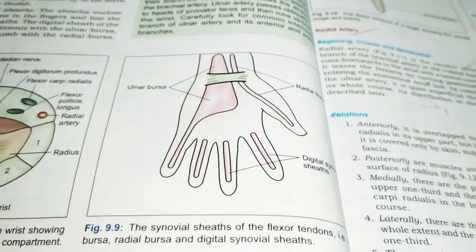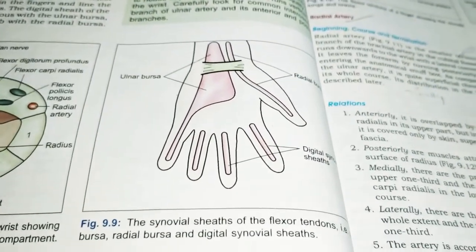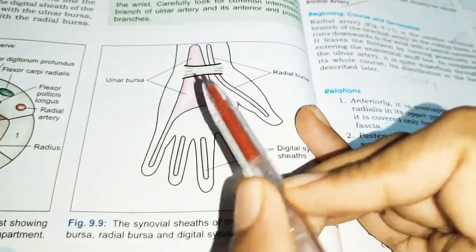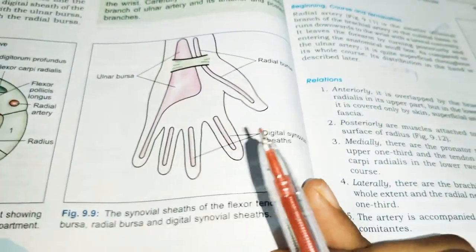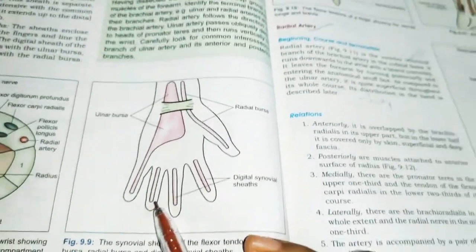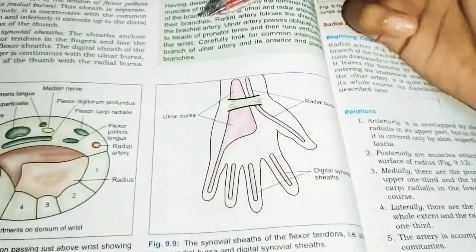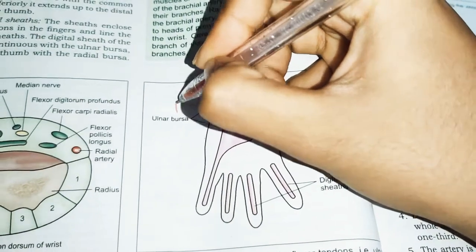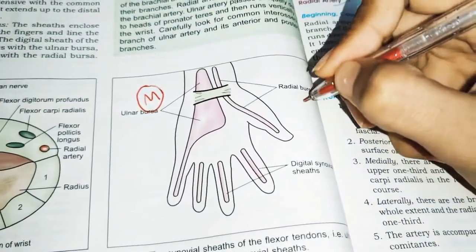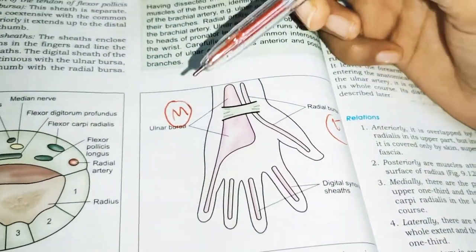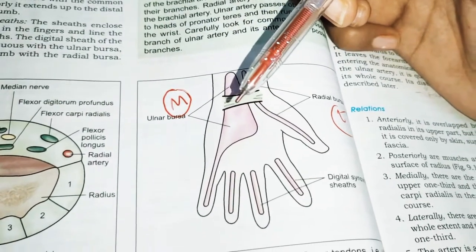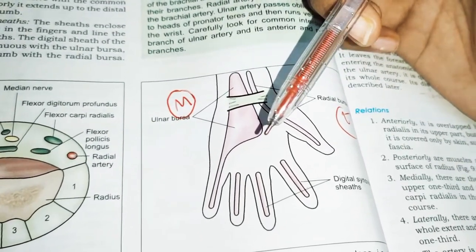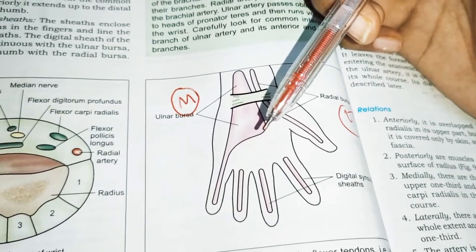Now we are going to start the synovial sheaths of flexor tendons. We mainly have the ulnar bursa, radial bursa, and the digital synovial sheaths. Let us understand one by one. Starting with the ulnar bursa — as you can see, the ulnar bursa is on the medial side. It is also called the common flexor synovial sheath.